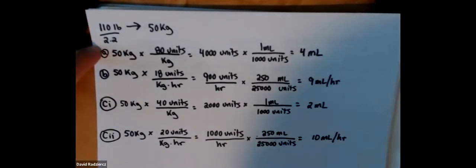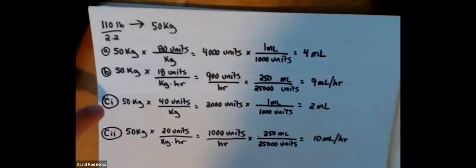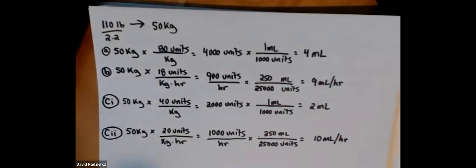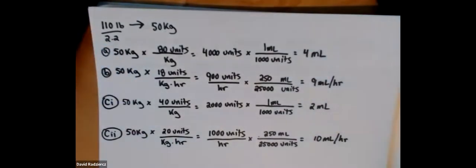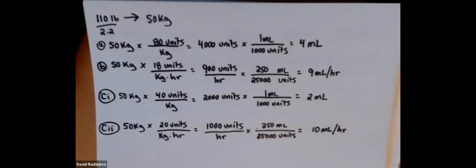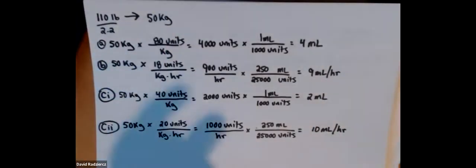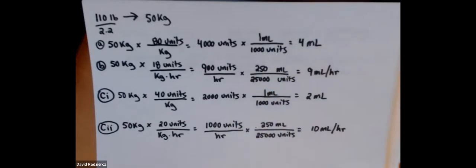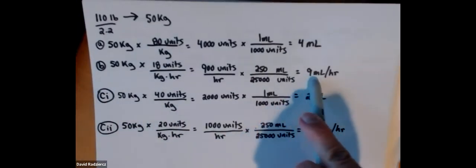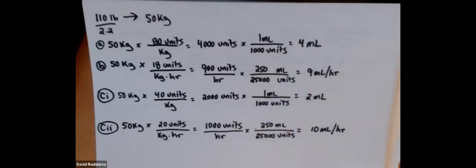On your test, you'll either have solving A and B — which is most likely what you'll see — or you'll have solving parts C1 and C2, where they give you an APTT and you get the information from the protocol. The other thing that would change is the patient's weight. Whatever the weight, convert to kilograms, round to the nearest tenth. Whatever your final answer is, round to the nearest tenth. So if you get 4.25 milliliters, your answer would be 4.3 milliliters; if you got 8.45 milliliters per hour, it'd be 8.5 milliliters per hour.